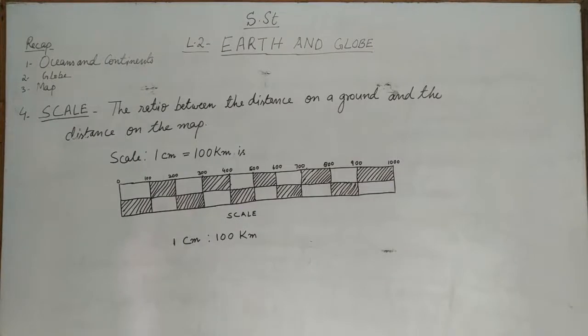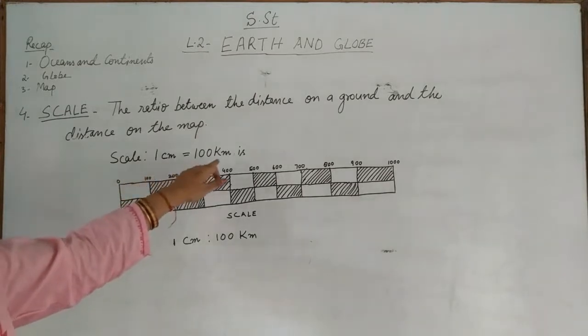So the scale is the ratio between the distance on a ground and the distance on the map. The scale shows the ratio between the distance of two places. For example, the distance between two cities is hundred kilometers. Suppose the distance between two cities is 100 kilometers. On a map it is shown as one centimeter. So 100 kilometers, we cannot draw such a long map, so we take 100 kilometers as one centimeter. For example, as the scale is given here: one centimeter is equal to hundred kilometers.